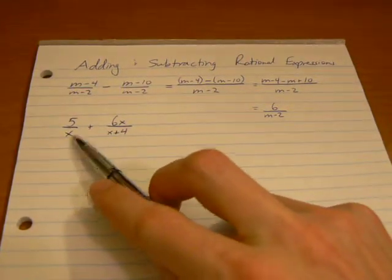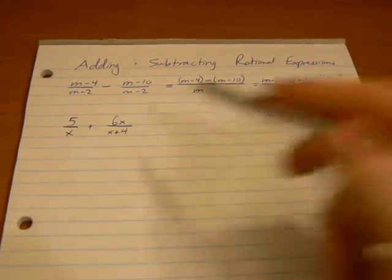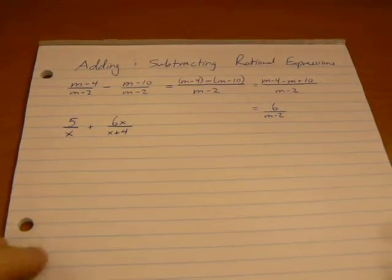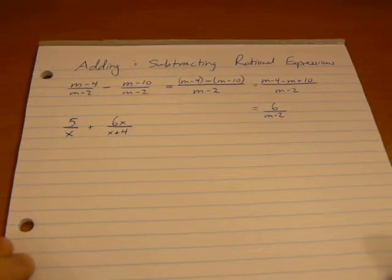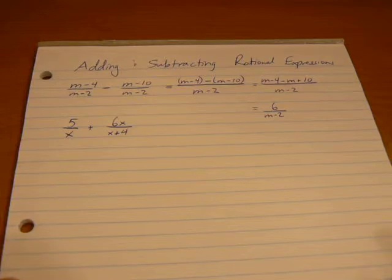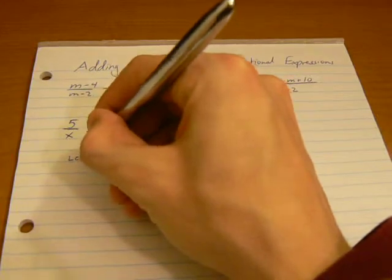Let's look at the next question: 5 over x plus 6x over x plus 4. Here we don't have common denominators, but we can treat this exactly the same way we were working with monomial denominators. Only the algebraic is a little more complex.